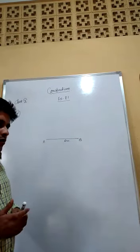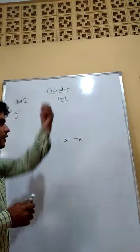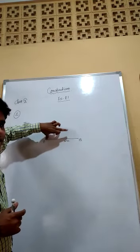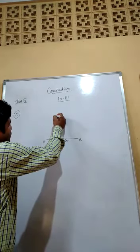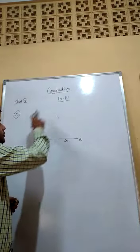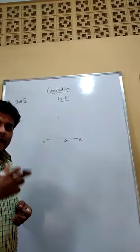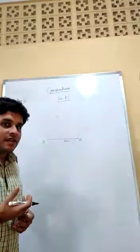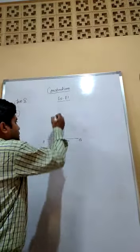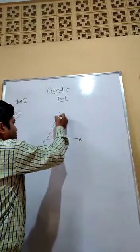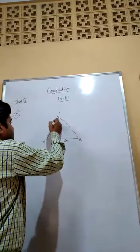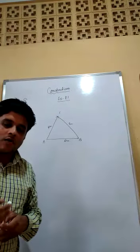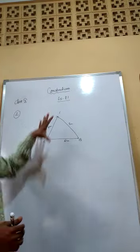Now draw the remaining sides. By using the compass, taking A as center and radius 4 cm, draw an arc. Then taking B as center, draw another arc with radius 5 cm. These two arcs — the arc of 4 cm and the arc of 5 cm — will intersect at a point C. If we join A to C and B to C, then AC is 4 cm and BC is 5 cm. That is the process to draw the triangle — this is the given triangle.